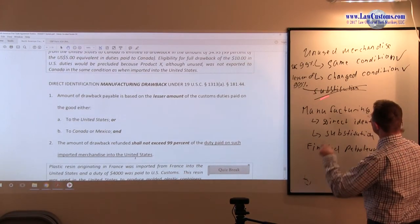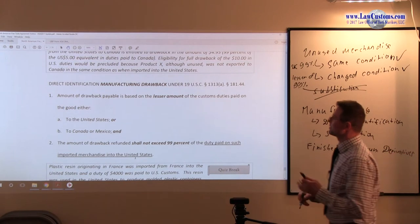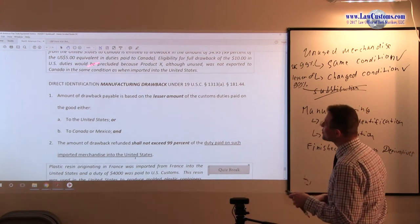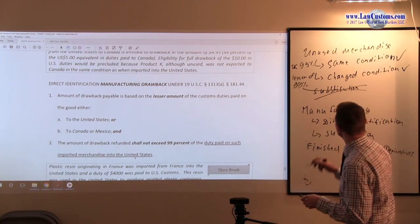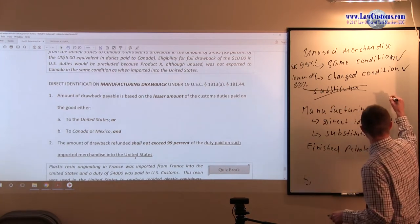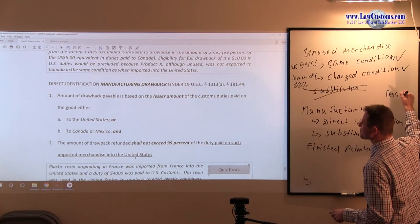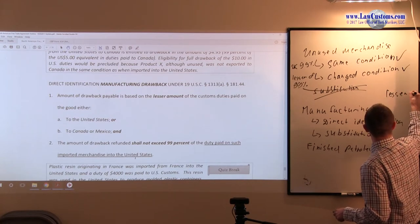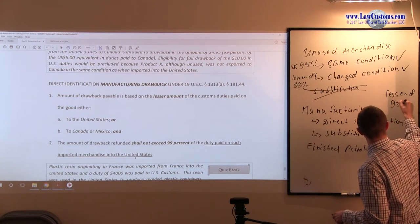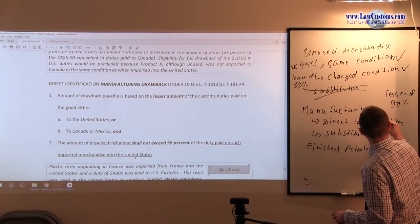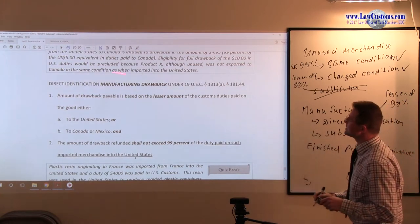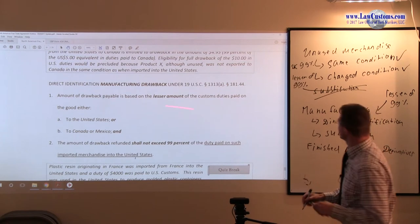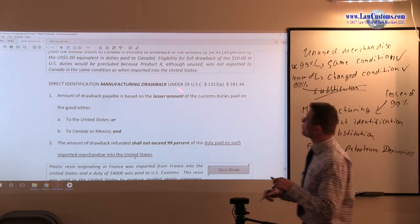Now we're going to the manufacturing drawback. So a manufacturing drawback, just like change condition and used merchandise, is also using the lesser-of rule. So the lesser-of rule or 99% rule is applicable to direct identification manufacturing drawback.